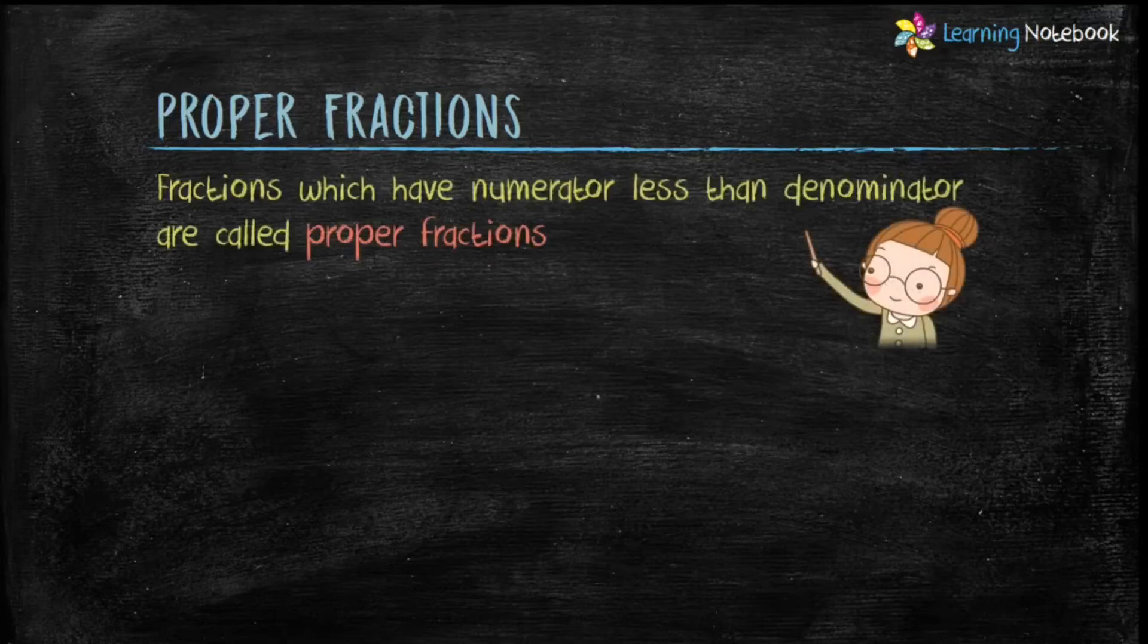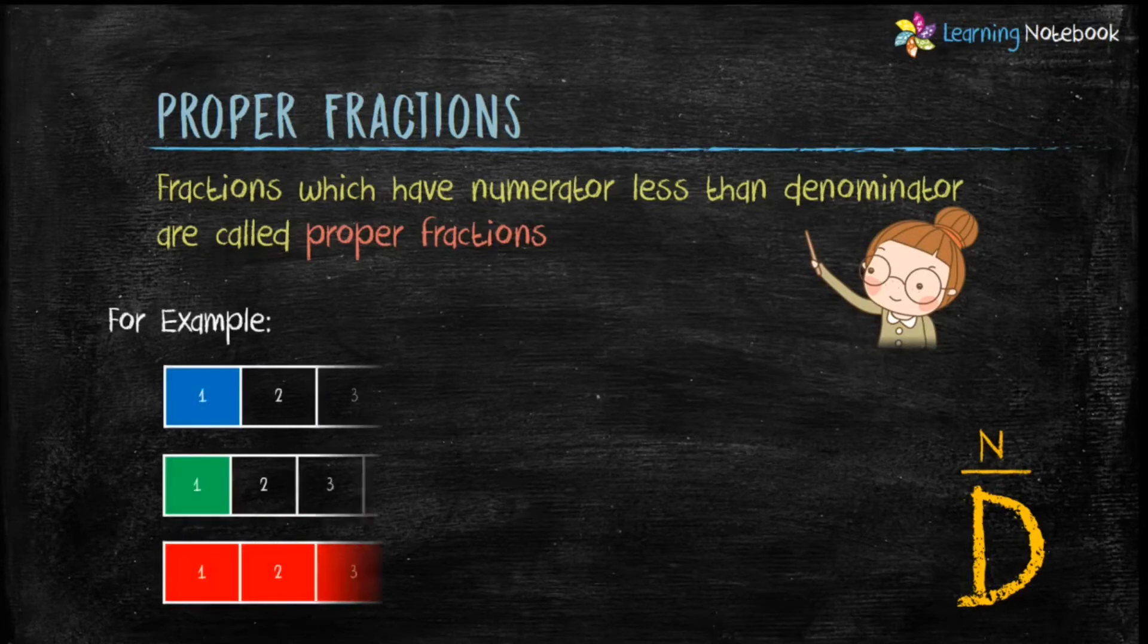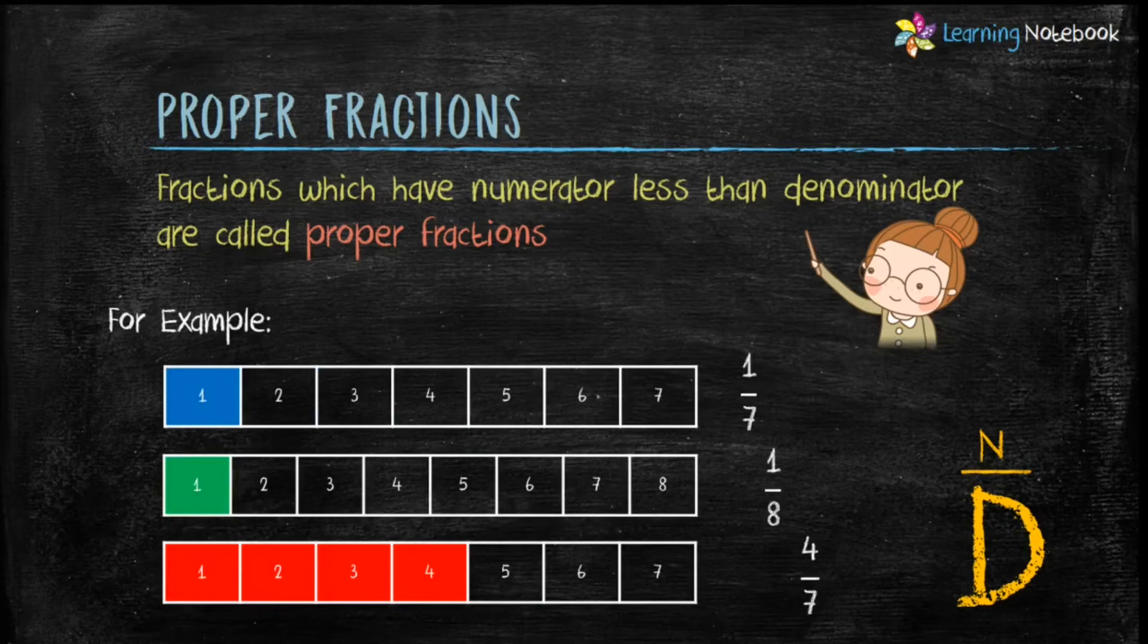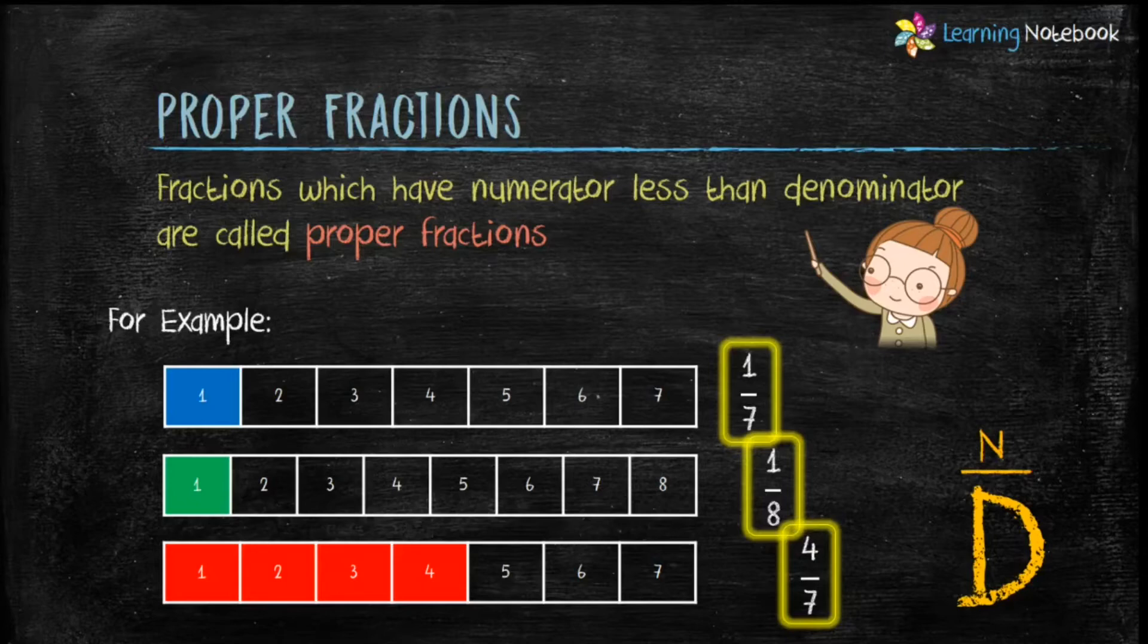So students, it means fractions which have numerator less than denominator are called proper fractions. So from our previous example, fractions like 1 by 7, 1 by 8, and 4 by 7 are proper fractions because their numerators are less than their denominators.